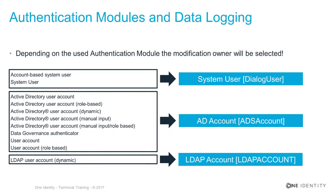Let me give some samples. On the slide, you can see account-based system user or system user-based authentication. These are system users and they will be assigned for any data change. For authenticators like Active Directory-based authenticators — user account and user account role-based — Active Directory accounts will be originators for some changes. You will see the domain and the SAM account name if you want to figure out who was doing the change.